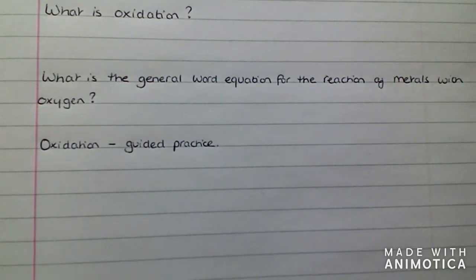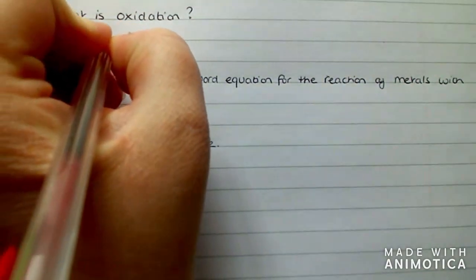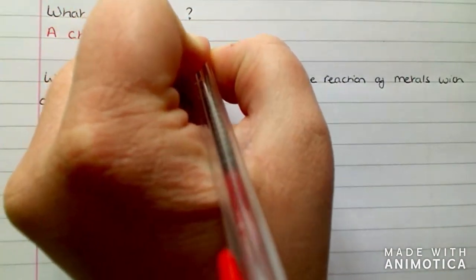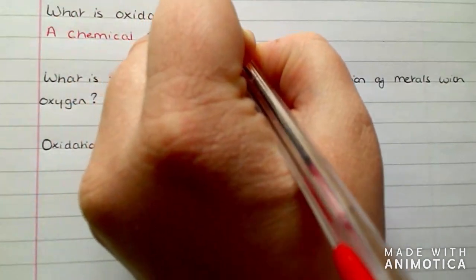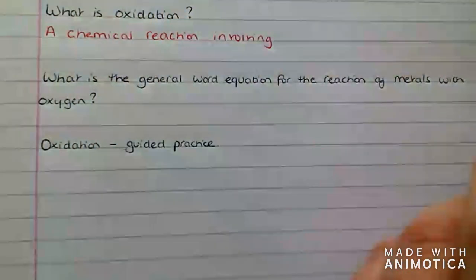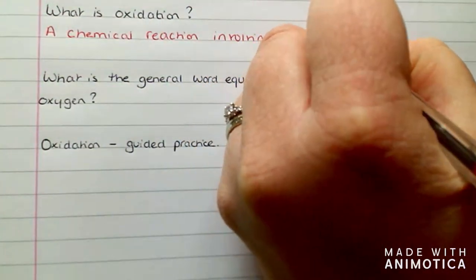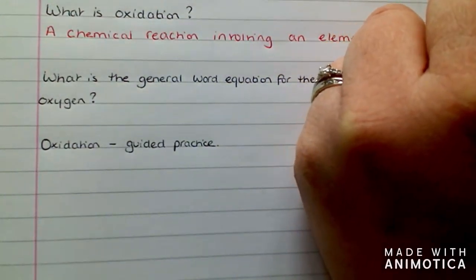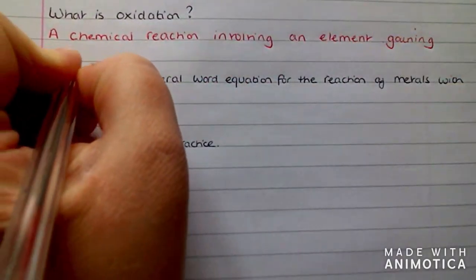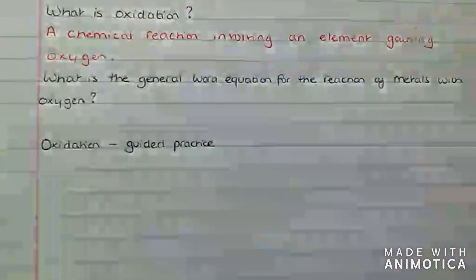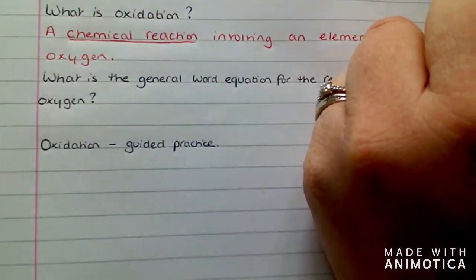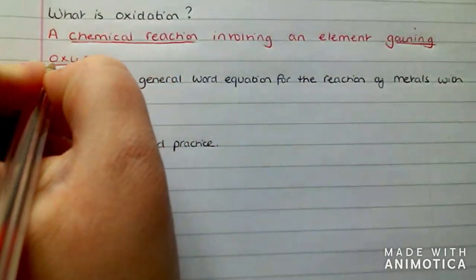Question one: What is oxidation? Oxidation is a chemical reaction involving an element gaining oxygen. Key things — it's a chemical reaction where you're gaining oxygen.